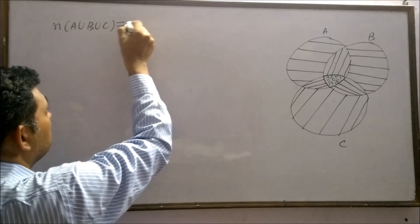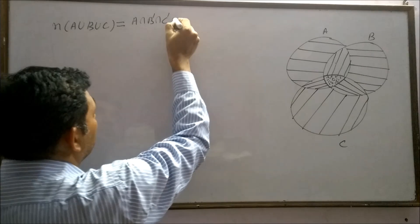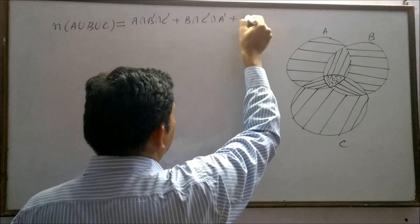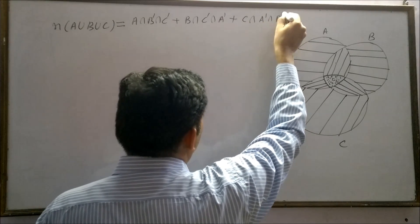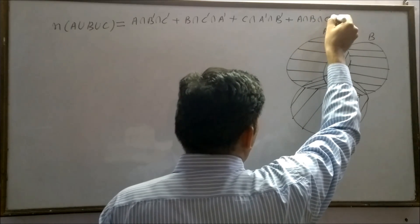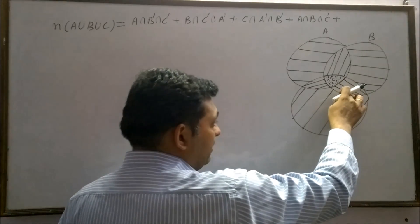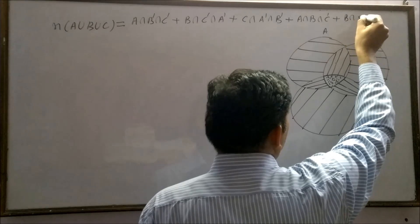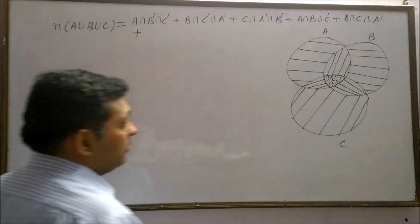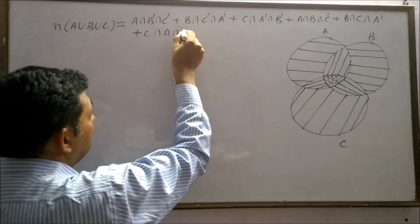Exactly A means A intersection B complement intersection C complement. Exactly B means B intersection C complement intersection A complement. Exactly C means C intersection A complement intersection B complement. A and B not C means A intersection B intersection C complement. B and C but not A means B intersection C intersection A complement.